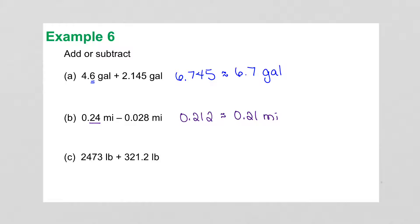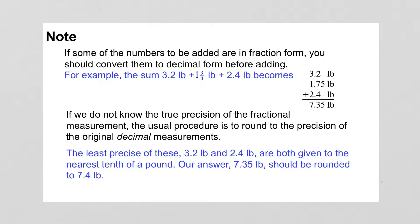Adding 2,473 pounds plus 321.2 pounds gives 2,794.2 pounds. But since the first number has no decimal places, we round to the nearest whole number: 2,794 pounds. This also applies when dealing with fractions — you have to convert the fraction first, so three-fourths would be two decimal places, or one-half would be one decimal place.